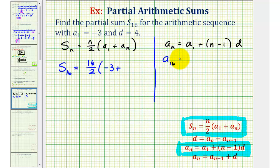So A sub 16 is going to be equal to A sub one, which we know is negative three, plus, we know N is equal to 16, so we'd have 16 minus one, or 15, times our common difference D, which we know is four.